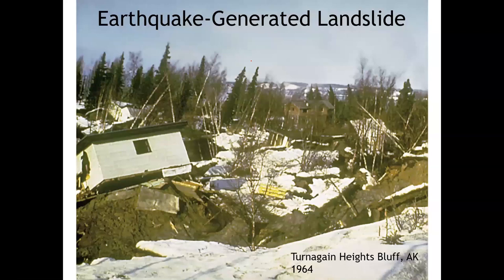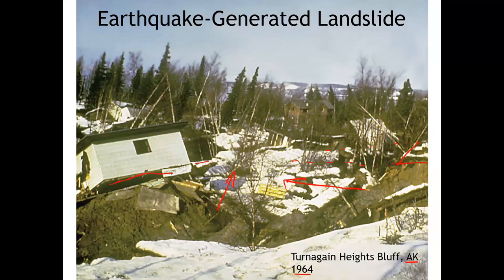Earthquakes can generate landslides. This land surface used to be continuous here — a section of the land that used to continue flat across here. But as a result of the Alaskan earthquake, the magnitude 9.2 in 1964, a whole section of this hillside has slid downhill. That's a mass wasting event, and it's taken the buildings that were here with it. There's really not much you can do if you're building in a landslide-prone area, so mitigation means avoiding building large structures on steep slopes in earthquake-prone areas.